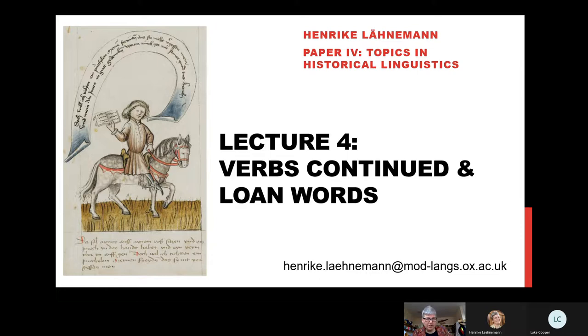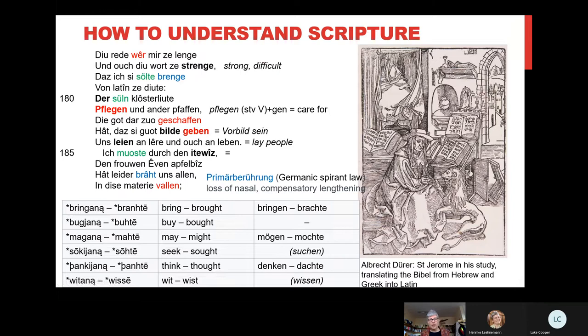Welcome to the fourth lecture. We've been looking at verbs, particularly strong verbs, last week, and I wanted to continue that, looking at weak verbs and combining that with loan words, because all weak verbs are derived from other words. To introduce new words into German, you have to take an existing word — that can be the past tense of a strong verb, an adjective, a noun, or a foreign word from English, or more usually in the Middle Ages from Latin, or for courtly vocabulary, from French.